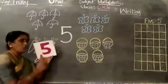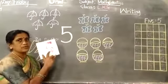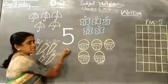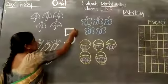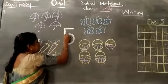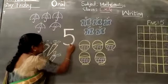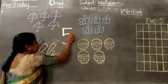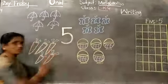See the board children. What is this? This is 5. Very good children. How do you write? See the board. Sleeping line, standing line, half curve. Once again, one sleeping line, one standing line, half curve. Very good children.